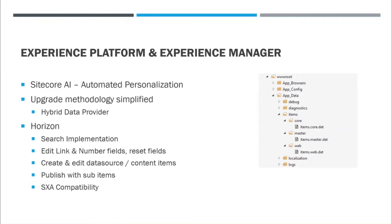The next thing is updates made to Horizon. Horizon has been around for a while — introduced around Sitecore 9. It was initially released in beta mode and has been improving with features added in almost every release since then. Horizon is a new editing tool or application that Sitecore has built which allows us to edit content and pages in a more seamless manner.